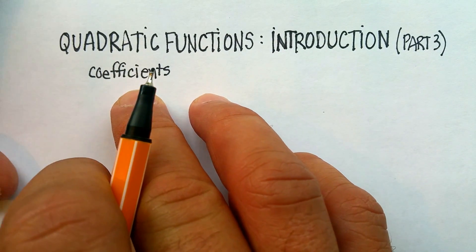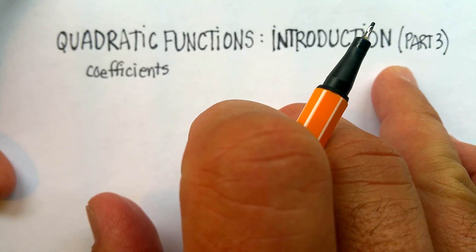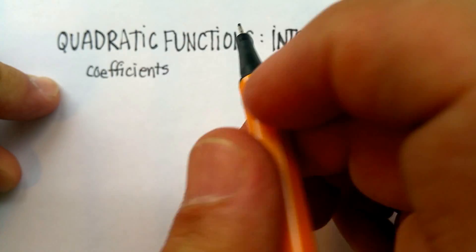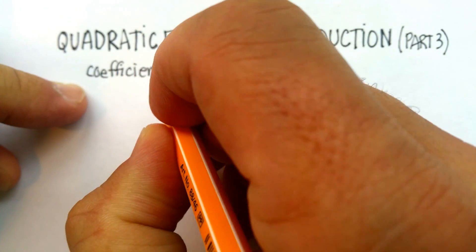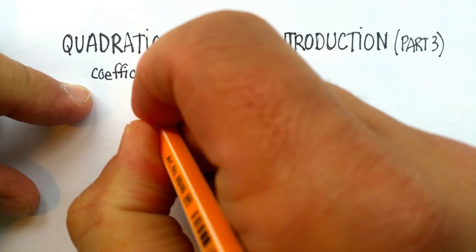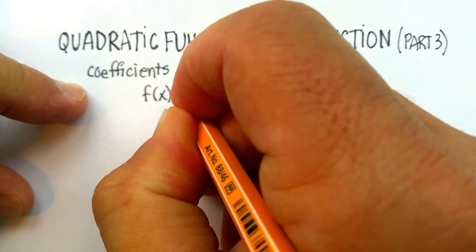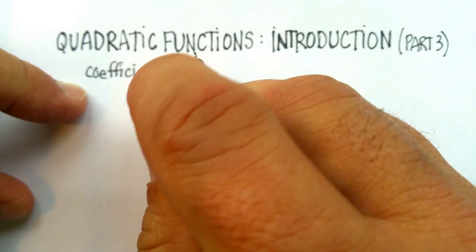Okay, so in this video, we're going to go over quadratic functions introduction part three, but we're going to go over something called the coefficients and talk about what exactly the coefficients themselves mean.